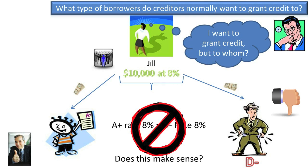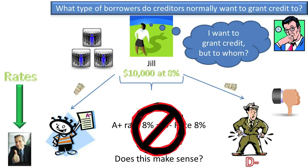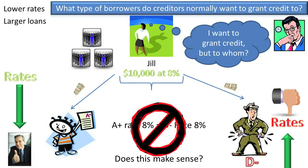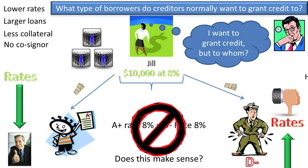The basic economics of supply and demand would result in huge demand to lend to A-plus borrowers, thus driving down their interest rates, and very little demand to lend to D-minus borrowers, thus driving their interest rates up. In addition to lower rates, lenders compete for A-plus borrowers by lending larger amounts, requiring less or no collateral, and not requiring co-signers. That is why companies with good credit ratings and individuals with good credit scores have lower debt financing costs than those with poor credit ratings.